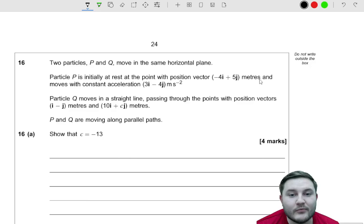Two particles P and Q move in the same horizontal plane. Particle P is initially at rest at the point with positional vector (-4i + 5j) meters and moves with constant acceleration (3i - 4j) meters per second squared. Particle Q moves in a straight line passing through the points with positional vectors (i - j) and (10i + cj). P and Q are moving on parallel paths, show that c is equal to negative 13.